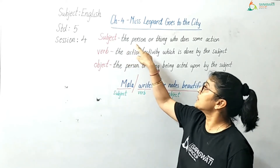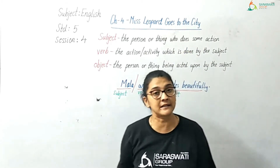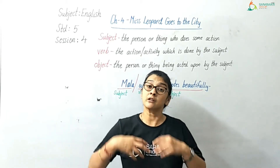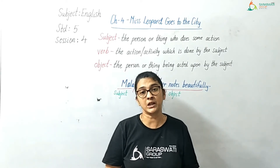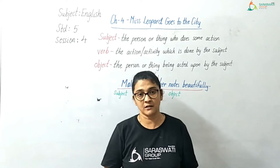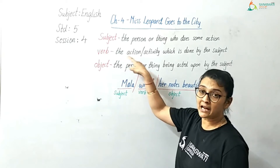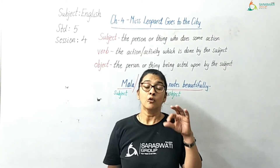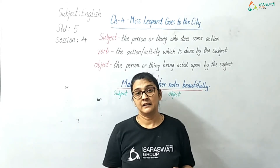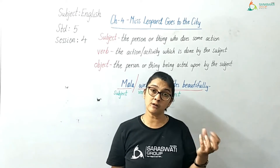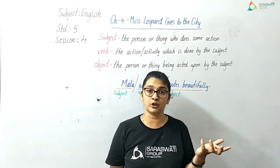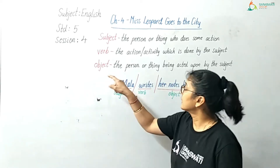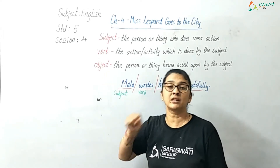In subject, the person or thing who does some action is known as a subject. The doer of the action is the subject. What is a verb? Verb means the action or activity which is done by the subject. The person or thing who does some action or activity in the sentence — that is known as a verb or we can also say predicate. That is the predicate part of the sentence. Then comes the object, the last part of the sentence.